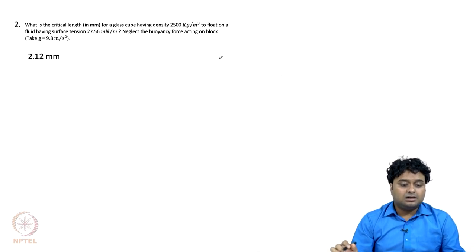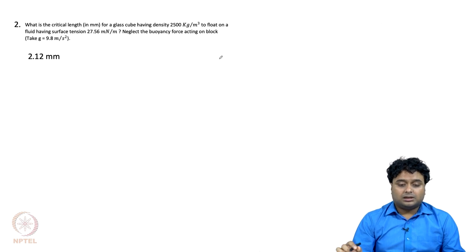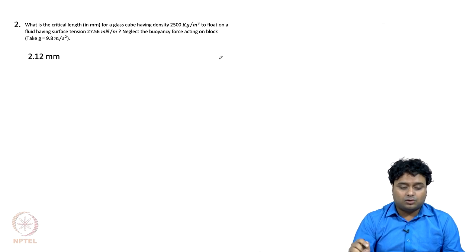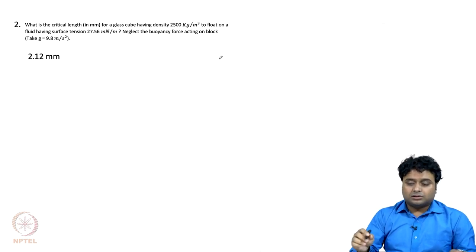The next question is from scaling: what is the critical length for a glass cube having density of 2500 kg per meter cube to float on a fluid having surface tension of 27.56 milli-Newton per meter, where buoyancy is neglected? This problem is almost exactly similar to the problem we discussed during the lecture, just with different values, but we will still do the solution.